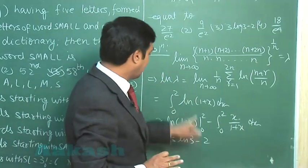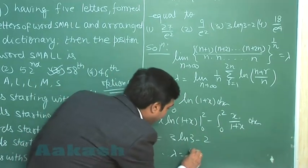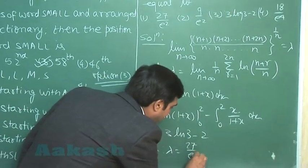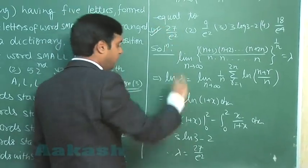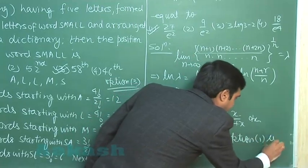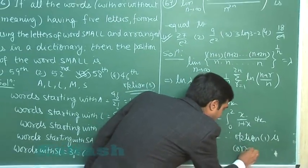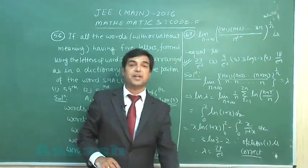Now this is log lambda. The question is about lambda. Therefore, lambda is obtained as 27 by e². So we can see from the given options, option 1 is correct. So this is clear. Let us move to the next one.